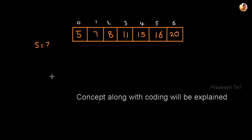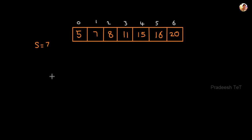We can do binary search on a sorted array. First, we will check whether the array is sorted. If the array is sorted, we can apply binary search and search for the number.